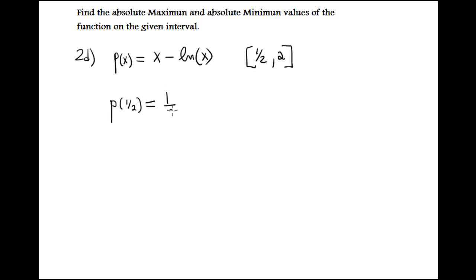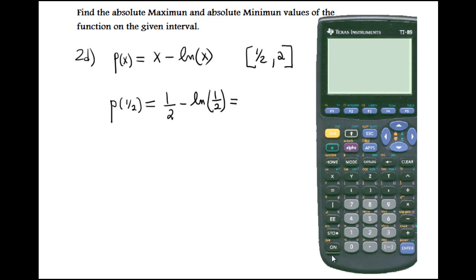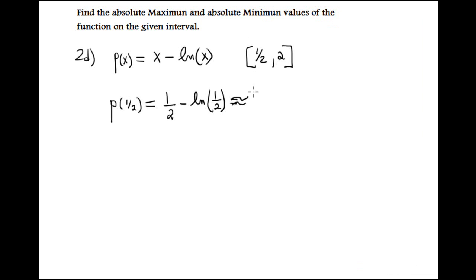f of one half is one half minus the natural logarithm of one half. Now, to compare, let me put in the calculator to see the decimal representation. Okay, my function is x minus natural logarithm of x. Evaluate at one half. Okay, in decimal is one point nineteen, approximately one point nineteen.